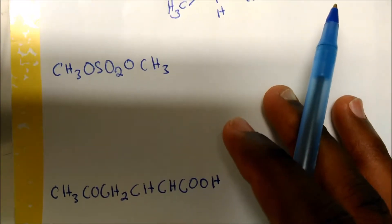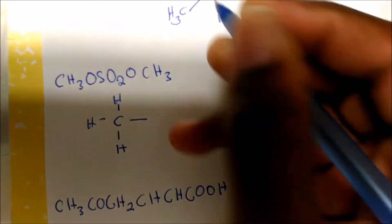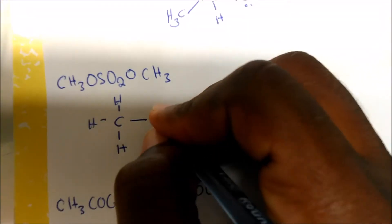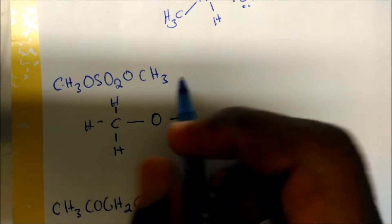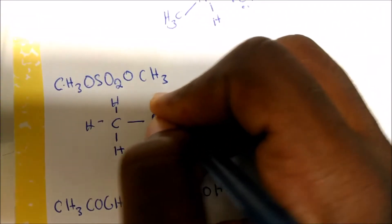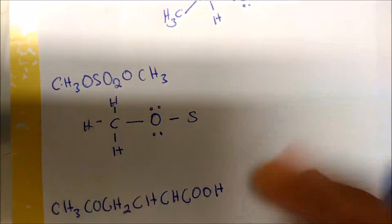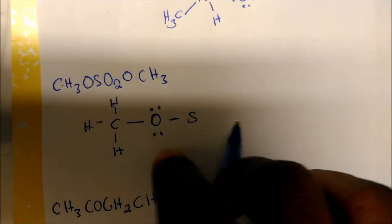How about this one? Reading from left to right again, I can see that I have a carbon bonded to three hydrogens. That obviously satisfies carbon's octet, and this carbon is also bonded to an oxygen. So three hydrogens and one oxygen. This oxygen is also bonded to a sulfur atom. Carbon has four bonds, so I can put two lone pairs around the oxygen to satisfy oxygen's octet rule.